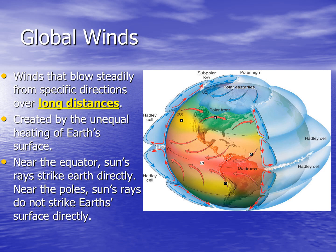There is a prevailing wind pattern on Earth. These are called global winds. Global winds are winds that blow steadily from specific directions over long distances. They are created by the unequal heating of the Earth's surface on a large scale. Near the equator, the sun's rays strike Earth directly. Near the poles, sun rays do not strike the Earth's surface directly. So the Earth's surface at the equator absorbs more of the sun's energy than by the poles, heating the Earth unequally.